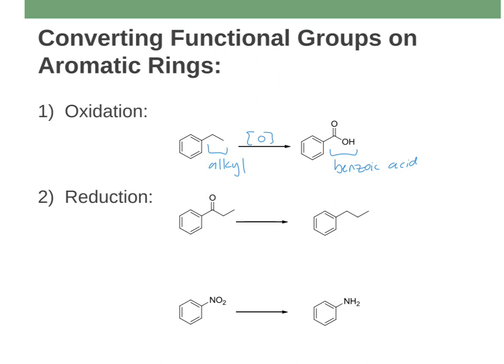We're also going to talk about some reductions. We're going to be able to reduce both carbonyls and nitros. One set of reagents will take a carbonyl and basically replace it with two hydrogens. And we'll also see where we can take a nitro group and turn it into just an amino group — getting rid of those oxygens and reducing them by replacing them with hydrogens.